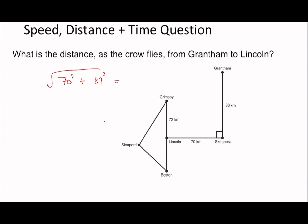70 squared plus 83 squared, square root, which is 108.6 kilometers. The important point is making sure you've got the right units.